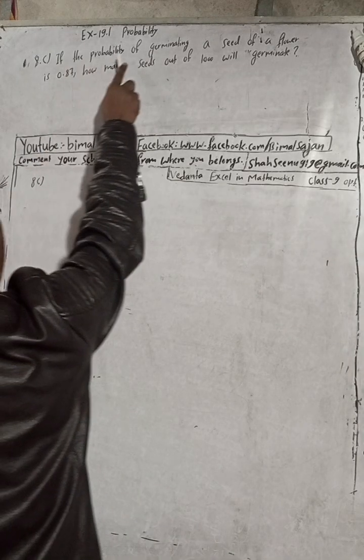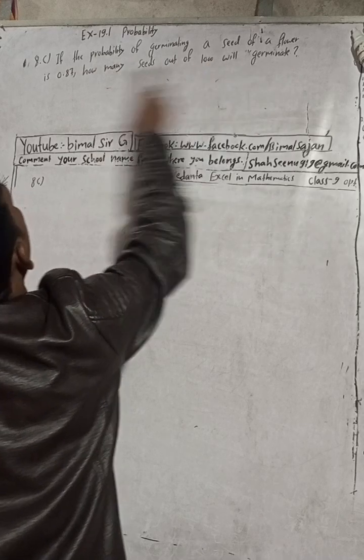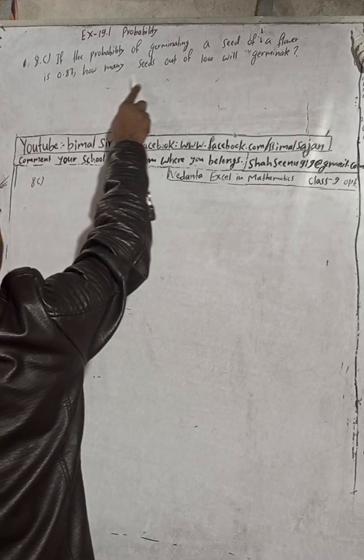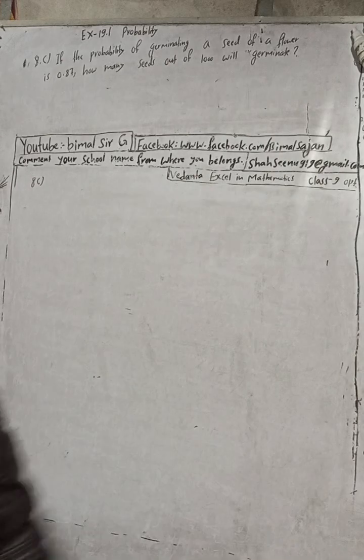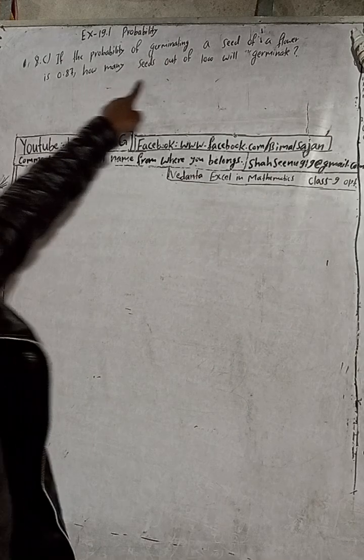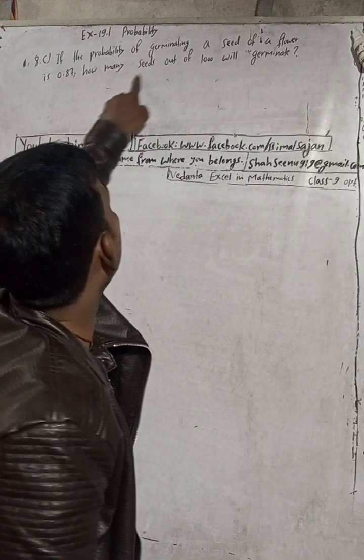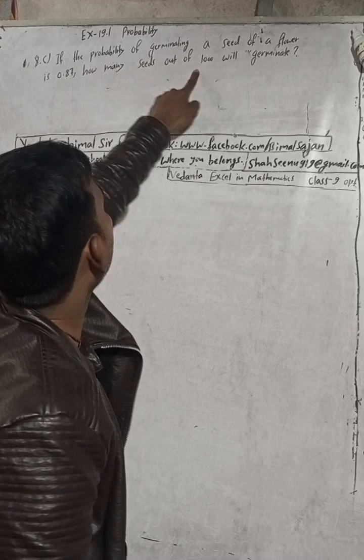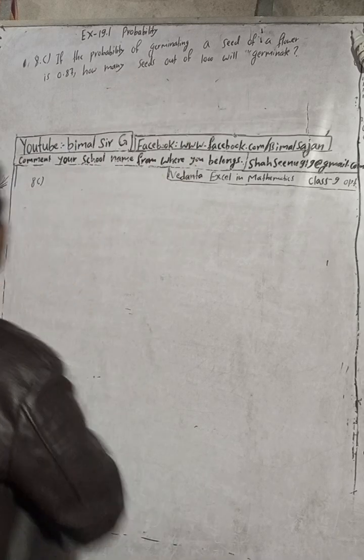Now the question is: if the probability of generating a seed of a flower is 0.87, how many seeds out of thousand will germinate? So out of thousand, this is total seeds, thousand seeds.